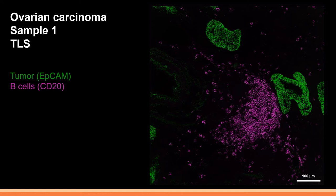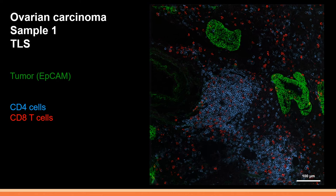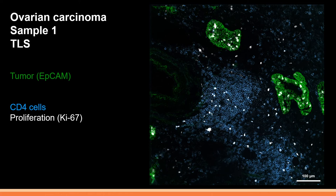The next cell type we need to see are the T cells. This is the staining of T cells with CD3 depicted in light blue, and we can see that many of the leukocytes are actually T cells. Here you see the two major subpopulations: CD4 T cells, which are the main population, depicted in blue, and CD8 positive T cells shown in red. Both types are present in the TLS as expected, but CD8 cells are also within the tumor tissue. We can also see proliferating cells shown in white by the Ki67 signal both in the TLS and within the tumor.